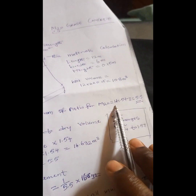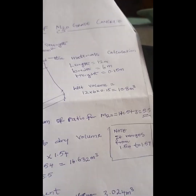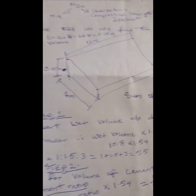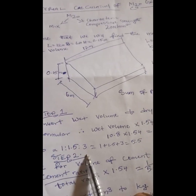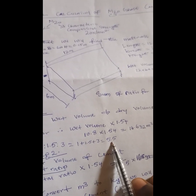The sum of ratios for M20 is 1 plus 1.5 plus 3, which equals 5.5. As you know, M20 has a ratio of 1:1.5:3, so when you sum all of them together you get 5.5.